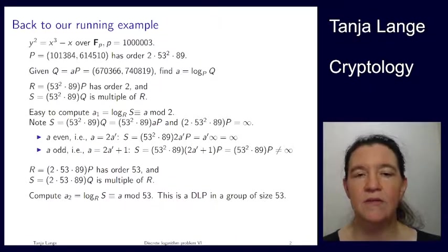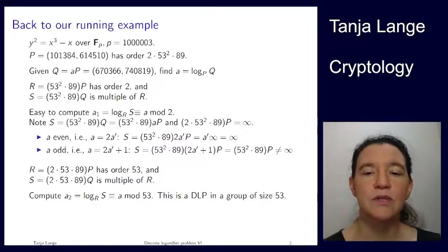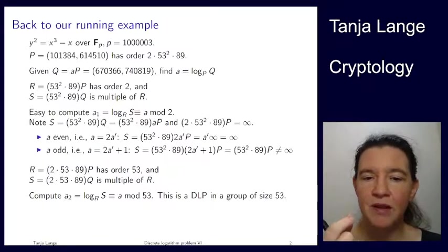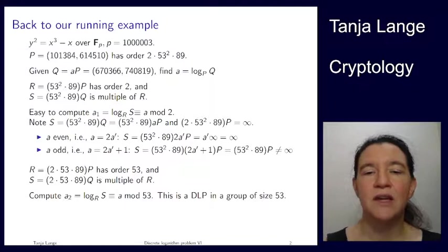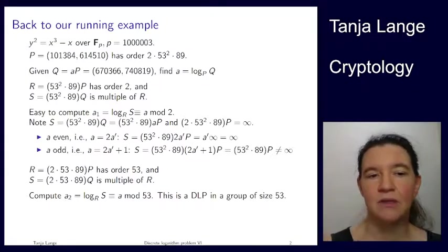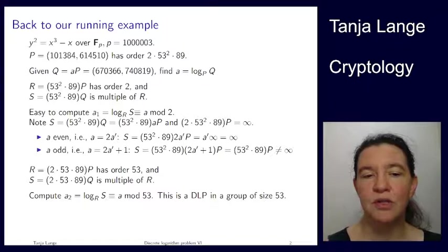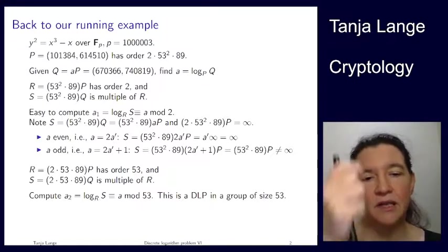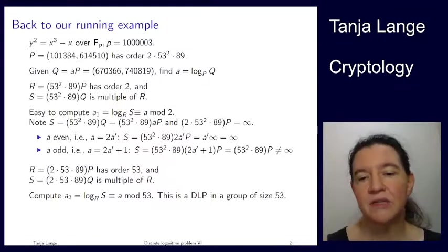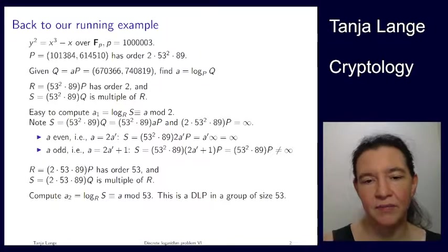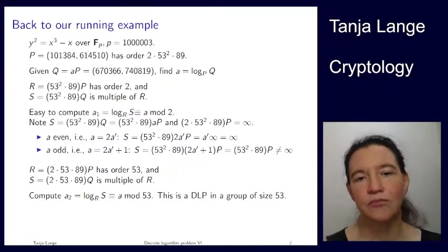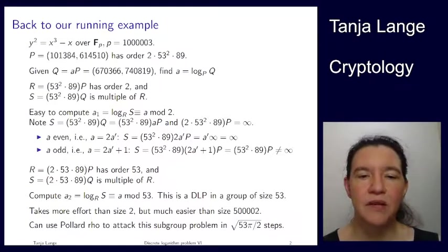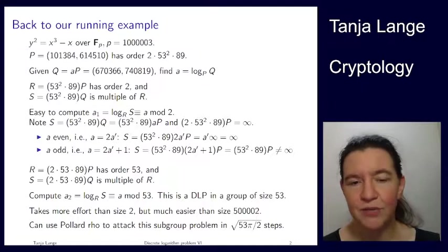And now we can ask, well, what is the discrete log of this new S with the basis of this new R? So, in this group of order 53. And so, we're computing this, and then we can do a similar case distinction to here, and we'll notice, you should think about this for a moment, but we will see that if it's 53 times a′ plus some number, which is between 0 and 52, then we will get exactly that many times R. So, when we compute a₂, which is the log base R of S, that gives us this number, which is the same as a modulo 53, because we got this by taking a written as 53 times a′ plus this number.